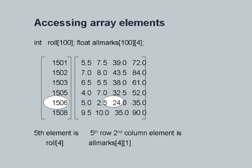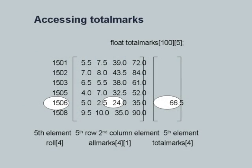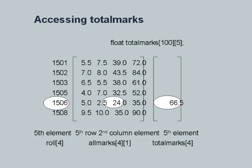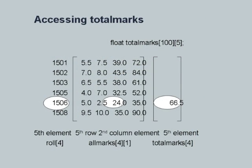Similarly for the larger array all_marks[100][4], the fifth row, second column element is all_marks[4][1]. I have also shown a one-dimensional array called total_marks[100], presumably storing the sum of all marks scored by every student. The fifth element of total_marks[100] is referred to as total_marks[4], because the index will be 4 for the fifth element. We would like to ensure that that element contains the sum total of all the marks in the fifth row of the all_marks array.